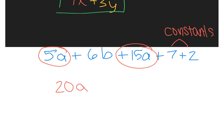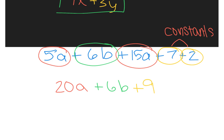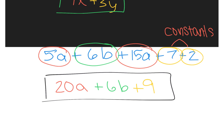The next thing I see is plus six b — there are no other b's, so it's just plus six b. And then lastly I have plus seven plus two, which is going to be plus nine. So when I simplify or combine like terms in the original expression, I get 20 a plus six b plus nine.